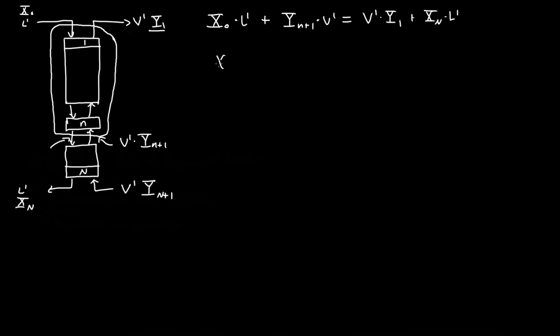So we're going to solve it for y1. So we get x naught times l prime plus yn plus 1 times v prime minus xn times l prime is equal to y1.